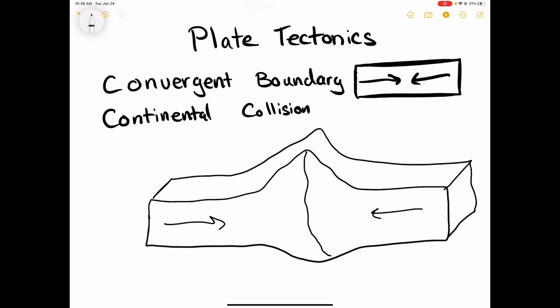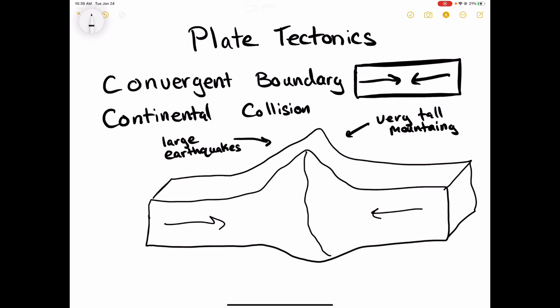When the two continents collide with each other, a mountain range forms in the middle. You get very tall mountains and you get large earthquakes. No volcanoes.